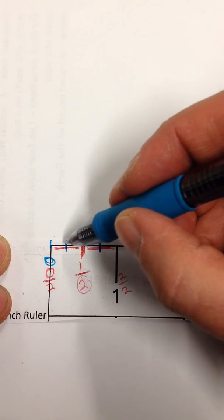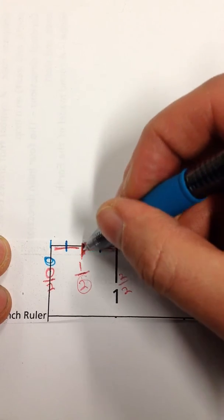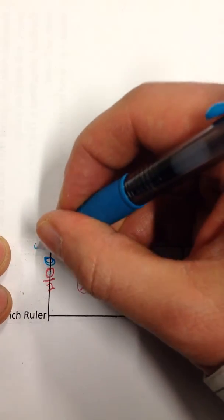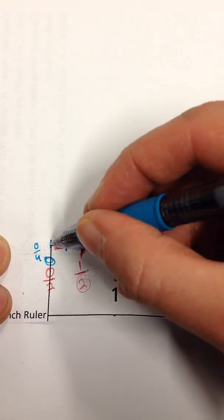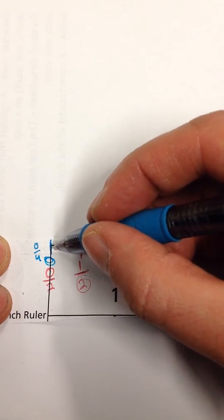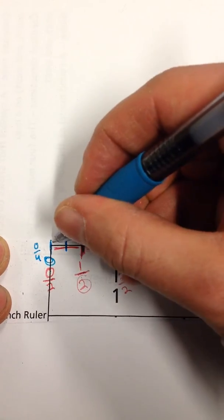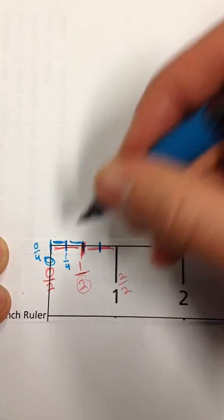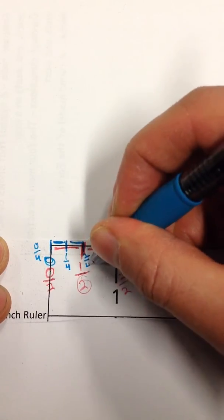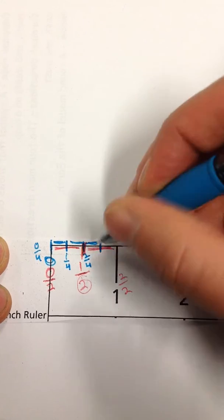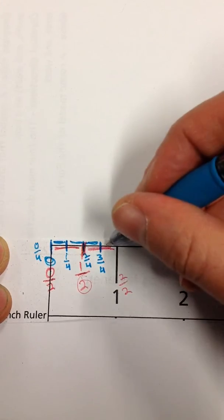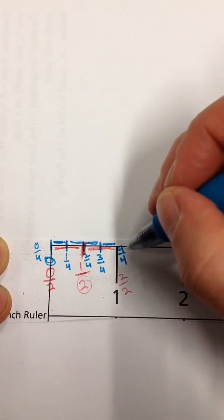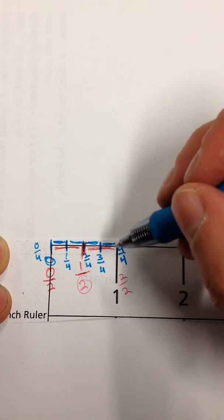And you're probably thinking, no, I only see two blue line segments here, or two blue hash marks here. Well, guess what? Watch this. This is going to be zero fourths, right here, because we haven't gone anywhere yet. This is going to be one fourth. This is going to be two fourths mark. This will be your three fourths mark. And this will be your four fourths mark. And now you can see where the fourths of an inch are.